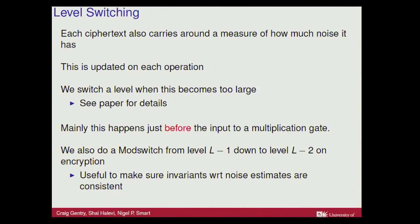When do we change levels? In old work, you'd change level every time you do a multiplication or addition - that's a stupid thing to do. Instead, we carry an estimate of the noise with each ciphertext, and only switch levels when we think the noise is going to get out of control. Generally, we switch levels before we go into a multiplication gate, not afterwards. It turns out that controls the noise much better. Exercise for the reader.